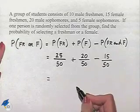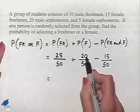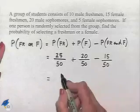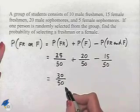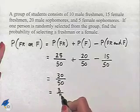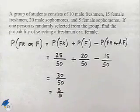Now let's just add those together. We're going to have 25 plus 20, which is 45, minus 15, which is 30, and divide by 50. We note we have a common factor of 10, and so we can reduce that to give us our probability of 3 fifths.